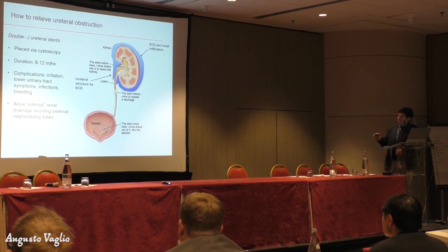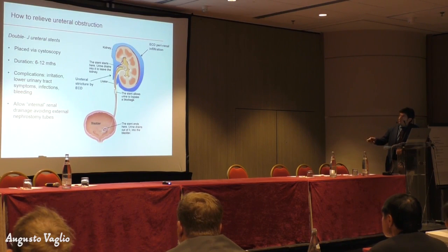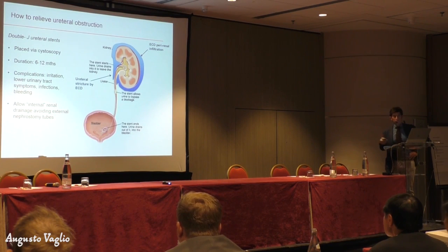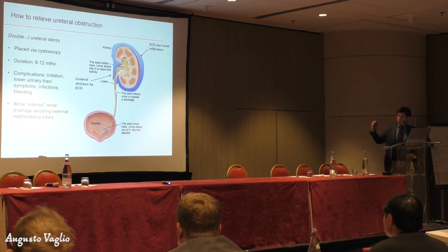This is what happens in ECD. ECD infiltrates all around the kidney and the proximal part of the ureter, and this is the site where we usually have a stricture caused by ECD. The problem is that sometimes, even if we put a stent and use an effective therapy to induce shrinkage of this tissue, hydronephrosis persists.